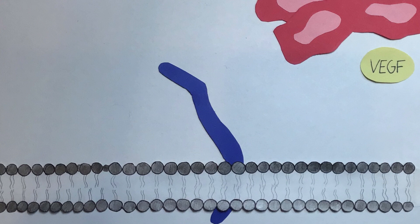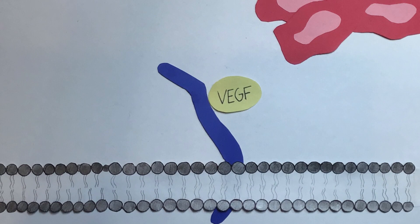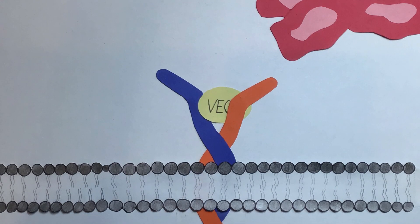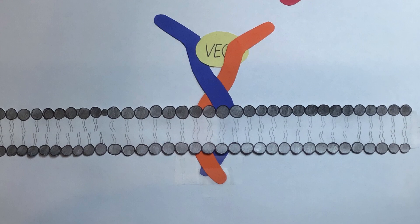When VEGF is released, it binds to the outer domain of the VEGF receptors on blood vessels. In its inactive state, VEGFAR exists as a single unit, but once the VEGFAR is activated, VEGFAR makes another copy of itself creating an active dimer.